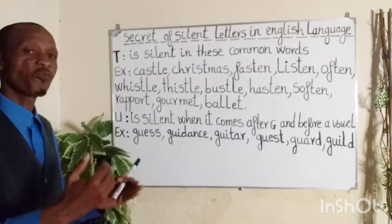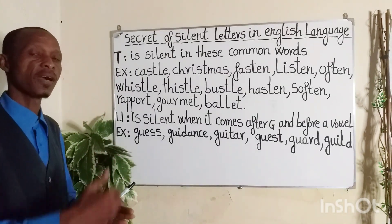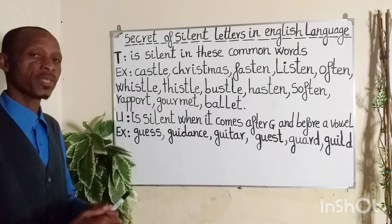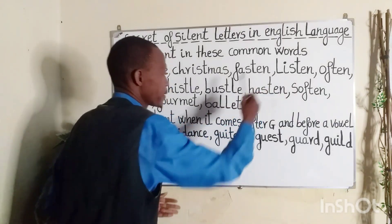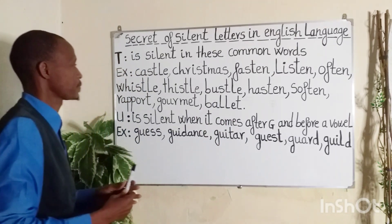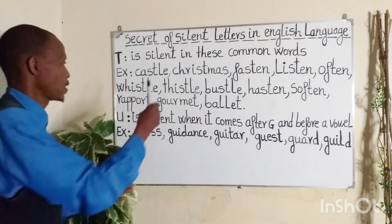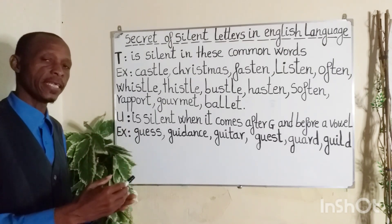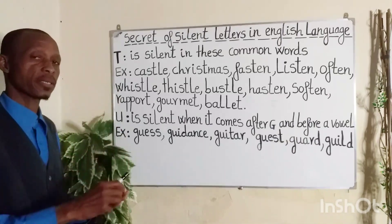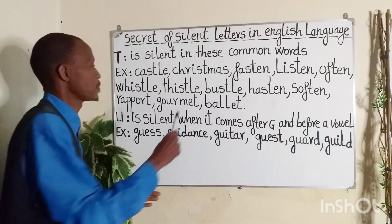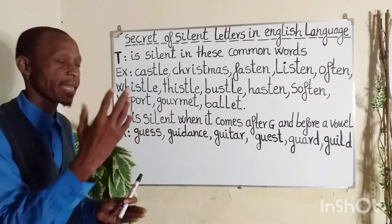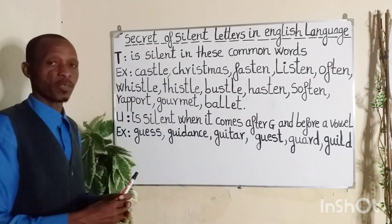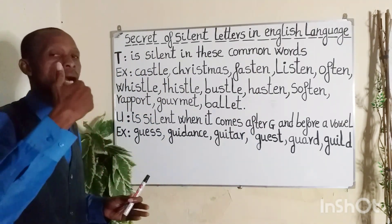Fasten — which means to fix one thing to another, especially by using something such as a nail. Listen. Often. Whistle. Thistle — a wild plant with sharp points on the leaves. Bustle — which means to rush or to hurry up. Hasten — which means to speed up or hurry up.